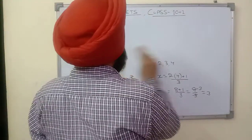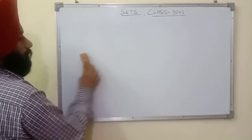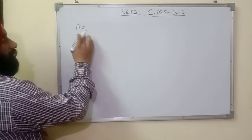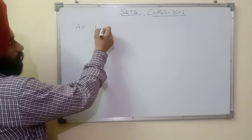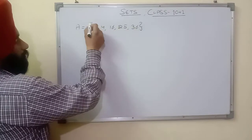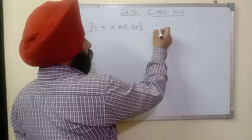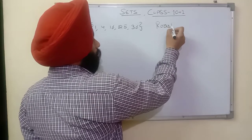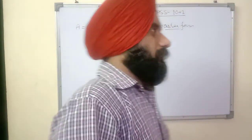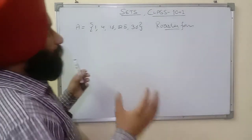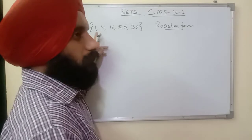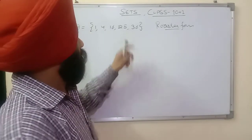Let's take an example. Suppose we are given set A = {1, 4, 9, 16, 25, 36}. This is in the roster form, also called tabular form. Now first we have to identify what these numbers are.